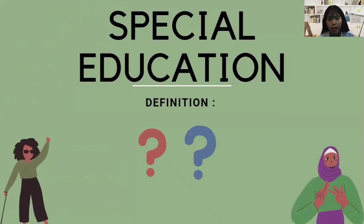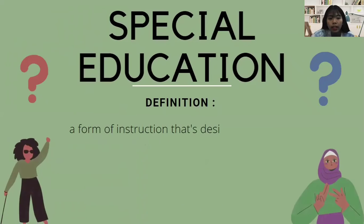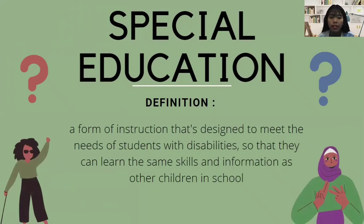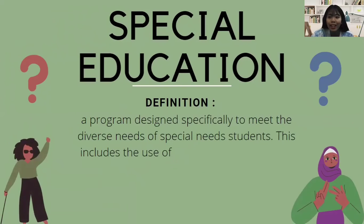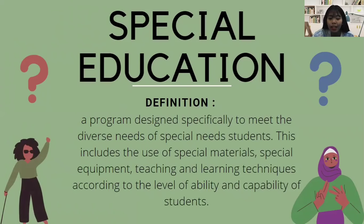So what is special education? Special education can be defined as a form of instruction designed to meet the needs of students with disabilities so that they can learn the same skills and information as other children in school. Special education also can be defined as a program designed specifically to meet the diverse needs of special needs students. This includes the use of special materials, special equipment, teaching, and learning techniques according to the level of ability and capability of the students.